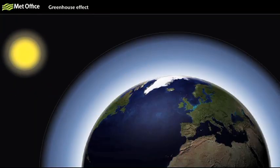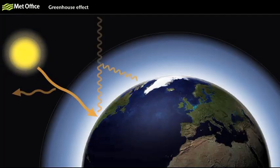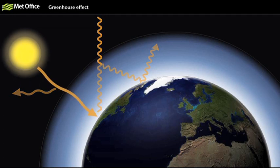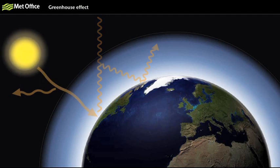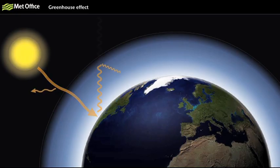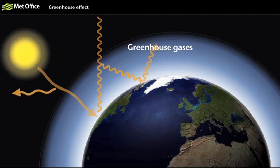Certain gases allow the Sun's energy through but stop it from escaping back into space, acting like a greenhouse. That's why it's called the greenhouse effect. The gases responsible for this effect, such as water vapour, carbon dioxide and methane, are called greenhouse gases.